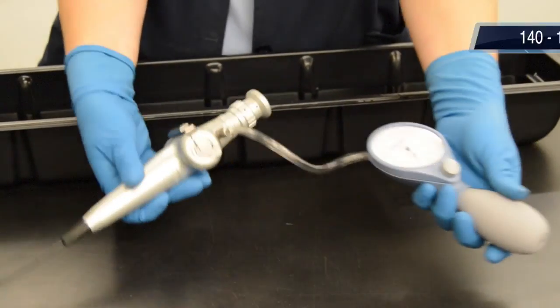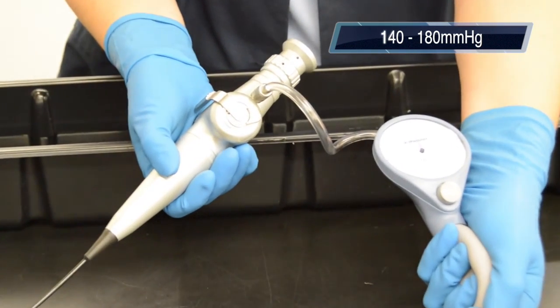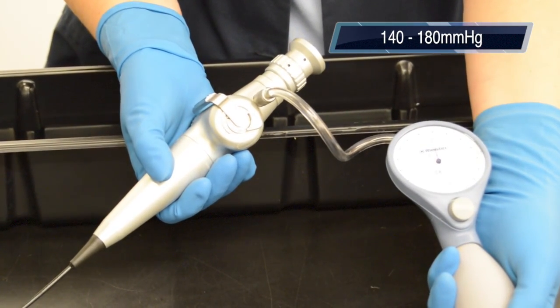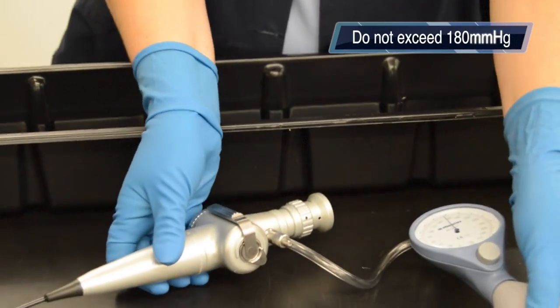Pump the hand bulb of the leak tester until the needle is within 140 to 180 mmHg or the green gauge area. Do not exceed 180 mmHg.